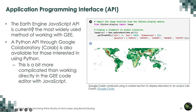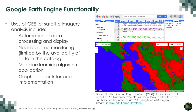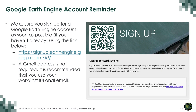Uses of GEE for satellite imagery analysis include automation of data processing and display, near real-time monitoring (limited by catalog availability), machine learning algorithm applications, and graphical user interface implementation. Google Earth Engine requires sign-up, so make sure you register for an account as soon as possible. Use the provided link to register. It takes a couple of days to get approval. A Gmail address is not required, but using your work or institutional email is recommended.